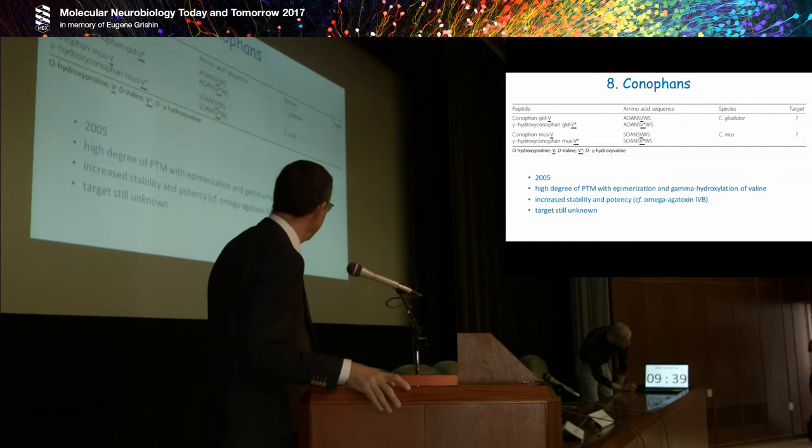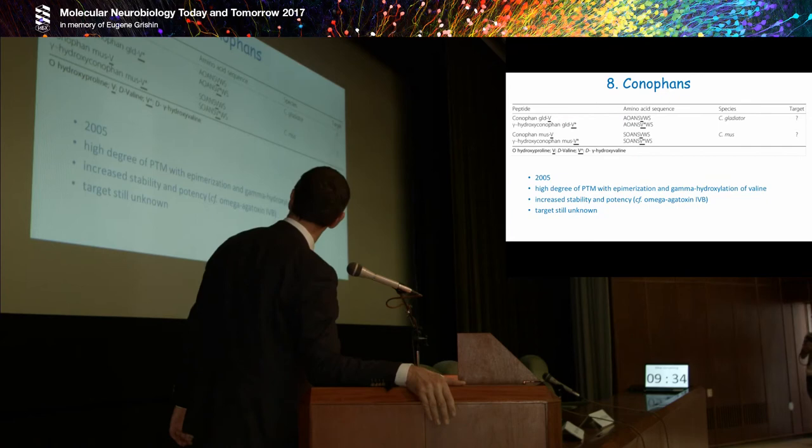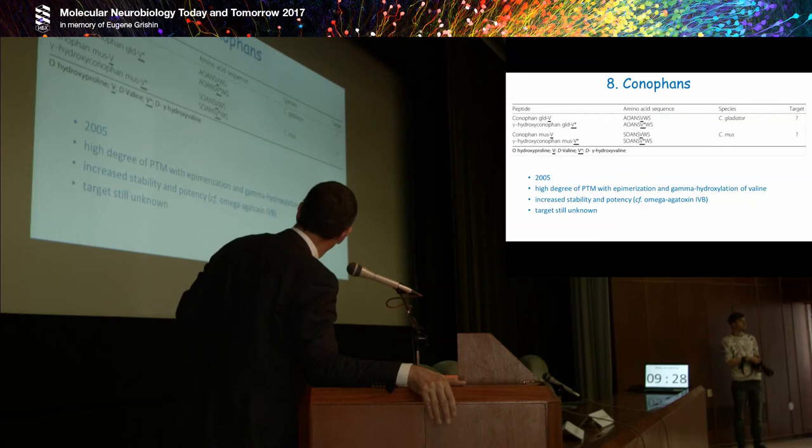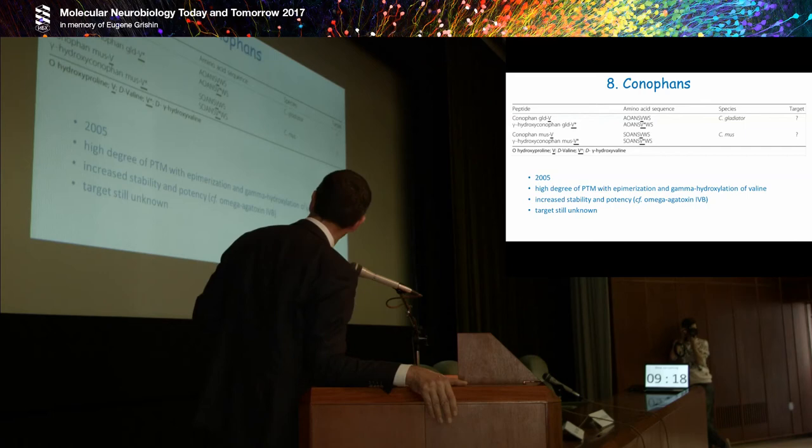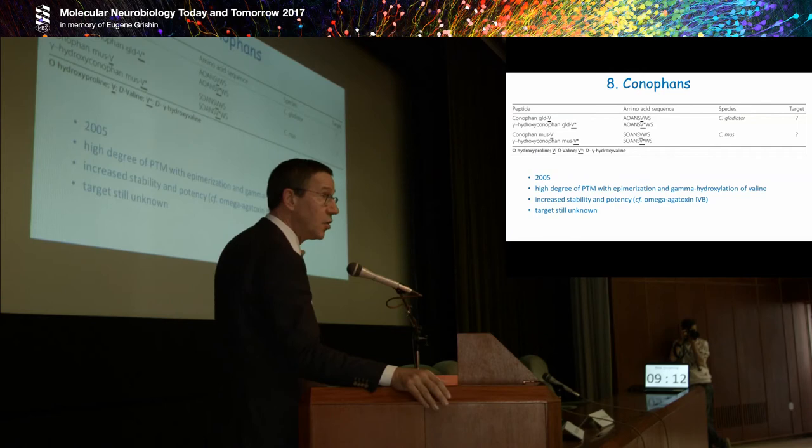The eighth family, the conophanins, fairly new since 2005. Only two or four members are known, they're very homologous. They have a high degree of PTM with epimerization and gamma-hydroxylation of valine. The L to D isoforms, and also normal valine and hydroxyvaline production. This would increase the stability and potency, but the target is still unknown. They are there in the venom. We have absolutely no clue what they do.